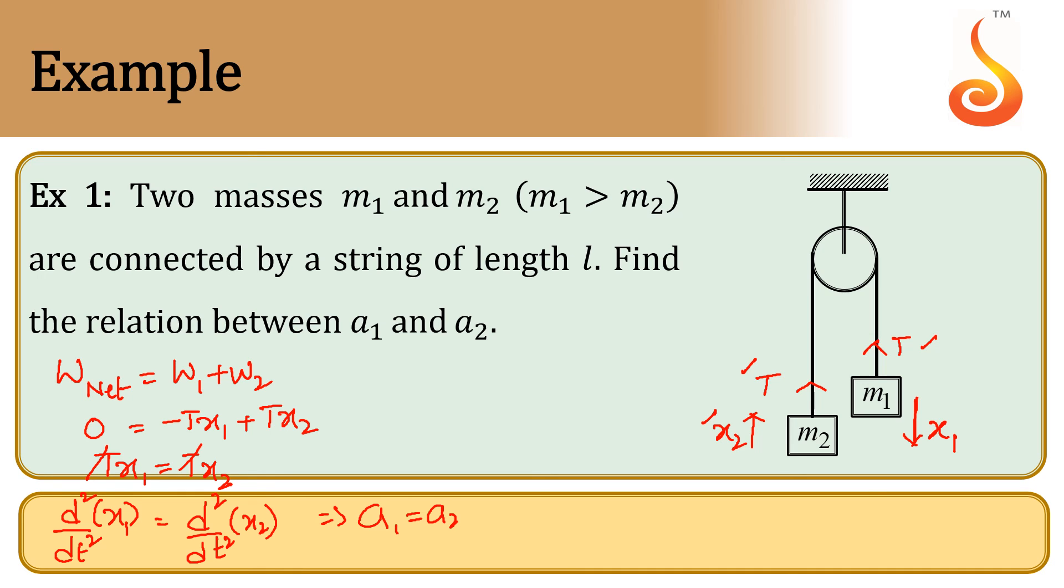So, the relation between first one and second one are equal. Both will have same acceleration. If one is going downward with A1, M2 will go with the same acceleration in the upward direction.